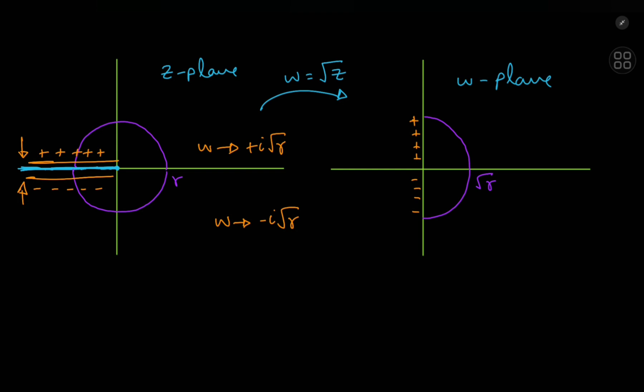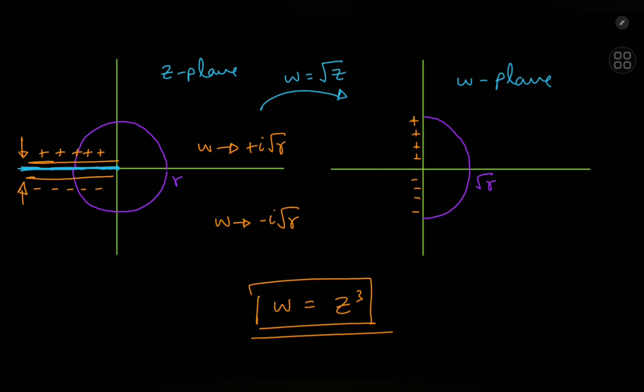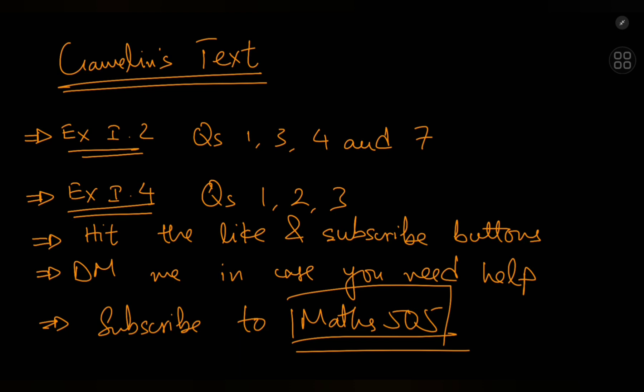I hope you enjoyed the video and learned something. As an exercise, try what I did in the video using the function w = z³ instead, studying it analogously to how I studied the square case. For homework, we need Gamelin's text: exercise 1.2 questions 1, 3, 4, and 7, as well as exercise 1.5 questions 1, 2, and 3. Please hit the like and subscribe buttons to support the channel. You can DM me on Instagram for help with homework problems, and subscribe to my main channel Maths505 for more tough math. All relevant links are in the description.